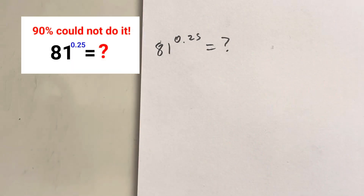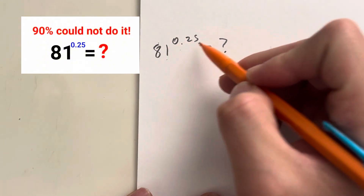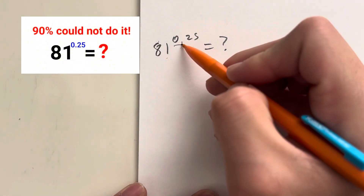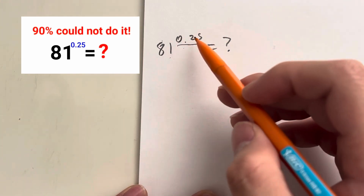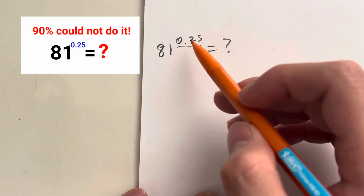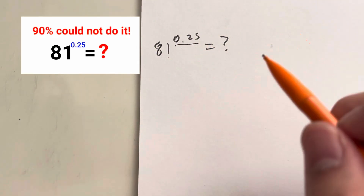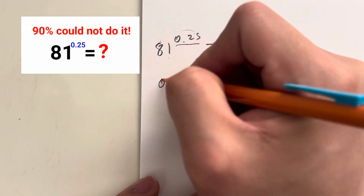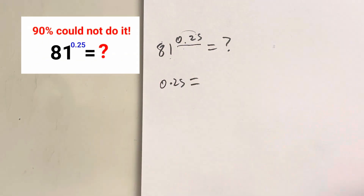90% of people get this question wrong. We have 81 to the 0.25. So how do we simplify this? Normally you're going to see exponents as a whole number or a fraction, not really a decimal. So we're going to convert 0.25 into a fraction.